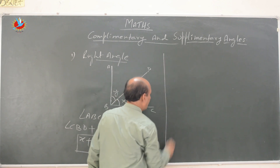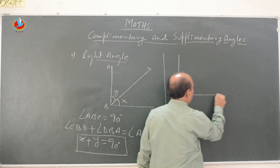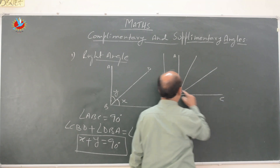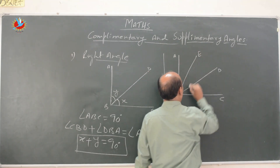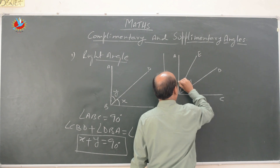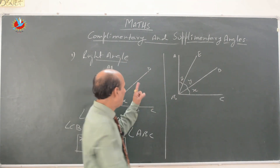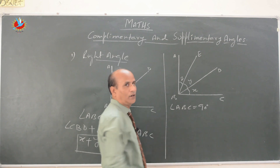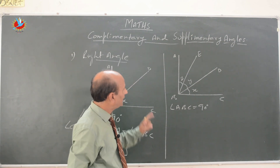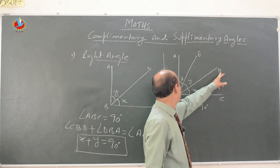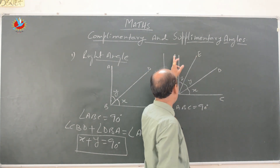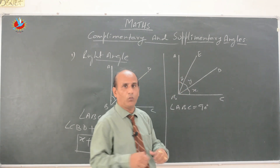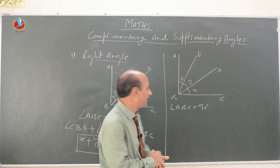Now suppose we divide the angle into three parts. We have divided this 90-degree angle into three parts: X, Y, and Z. Angle ABC is 90 degrees — a right angle. The three parts are angle CBD, angle DBE, and angle EBA. If we add X, Y, and Z, we will get 90 degrees.